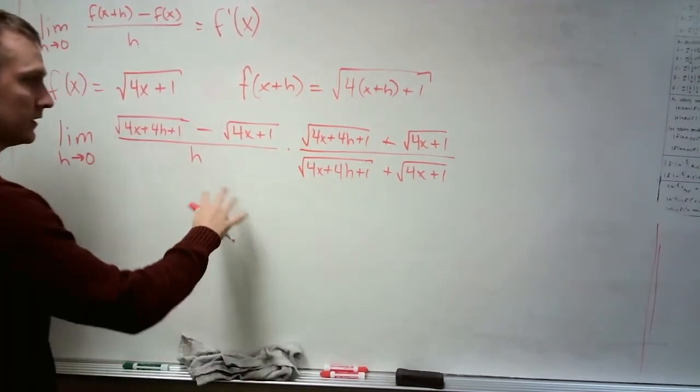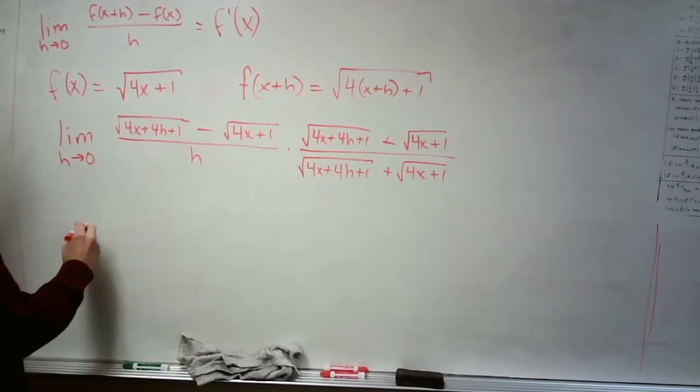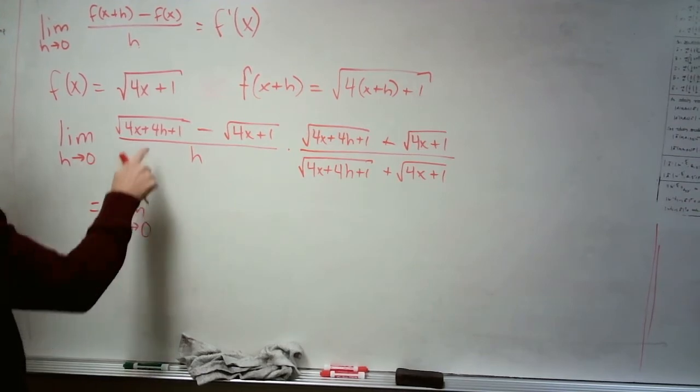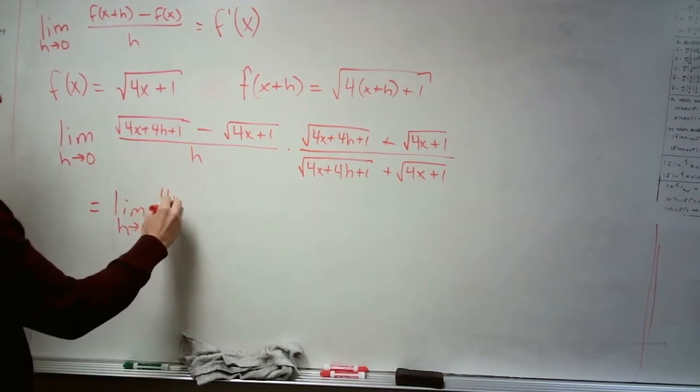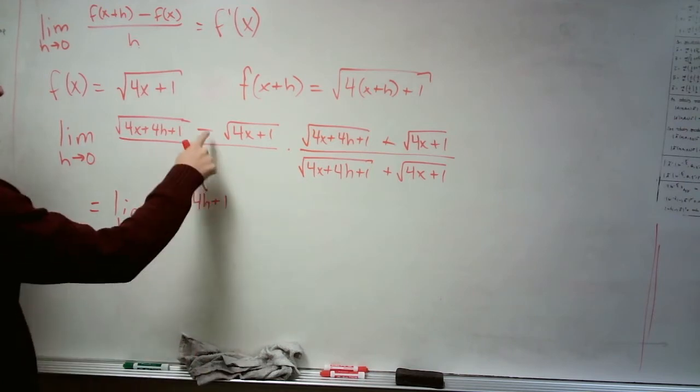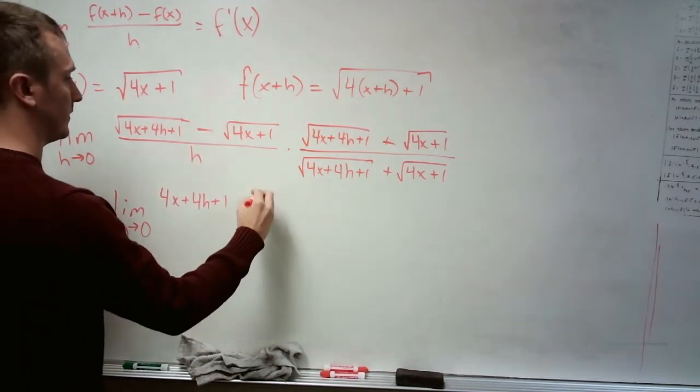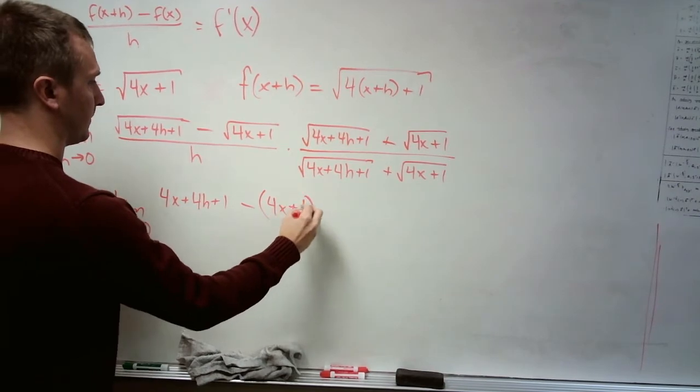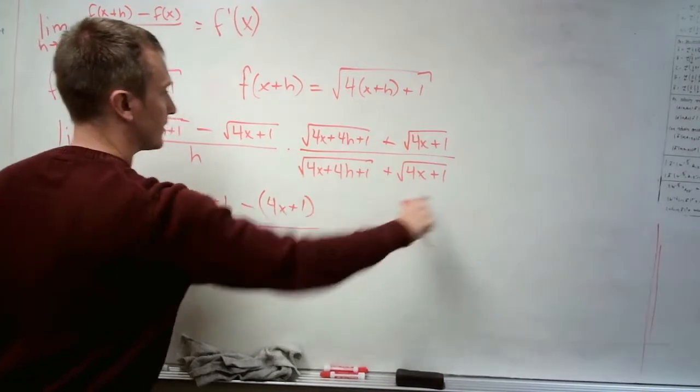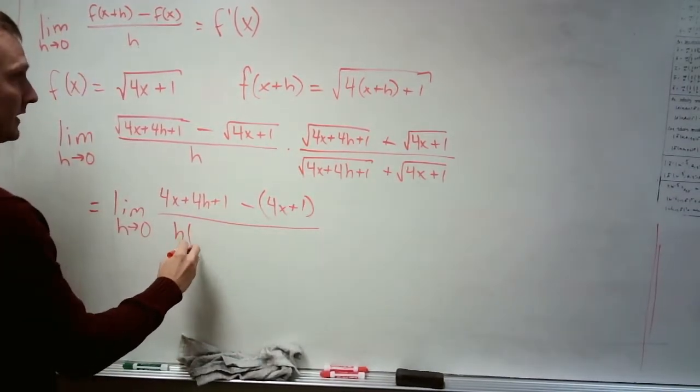So I just erased the nice little feature that we have. This becomes this squared. That's the undoing of that square root. Minus this squared. It's going to be all divided by h times this sum. I'm going to leave it like this.